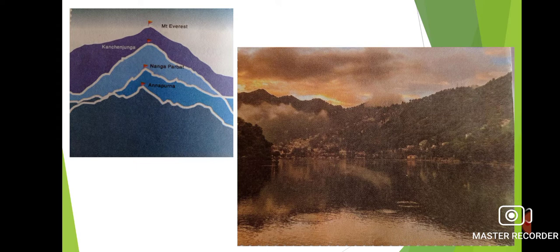The slopes of the Shivalik mountains are covered with thick forest where a variety of wild animals are found. In the third layer you can find thick forests with wild animals. The Garo, Jaintia, Khasi and Mizo Hills are part of the Outer Himalayas. Many people live in small villages on the mountain slopes. Crops such as rice and wheat, and fruits such as cherries, plum and apricot are grown here.